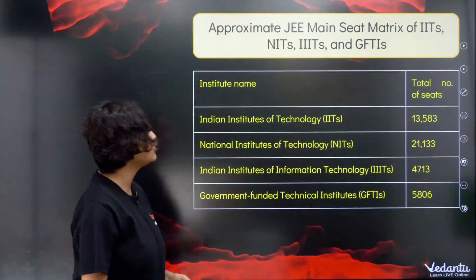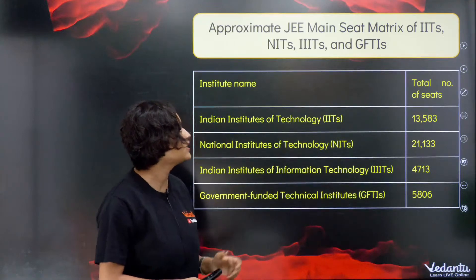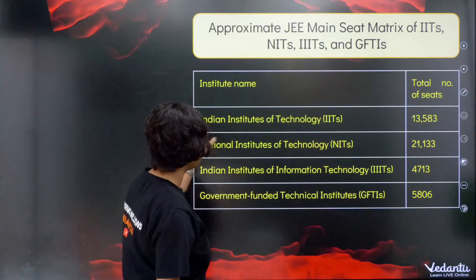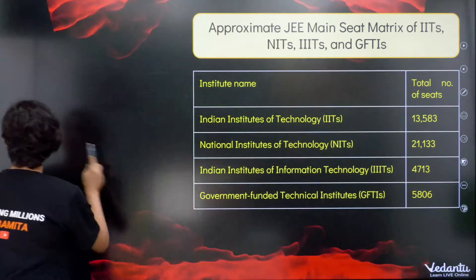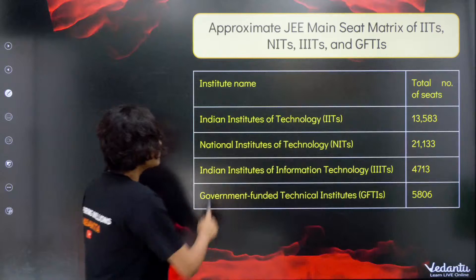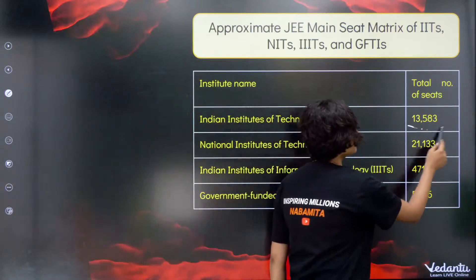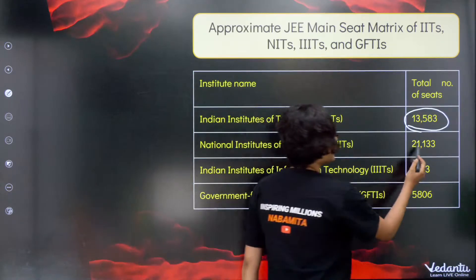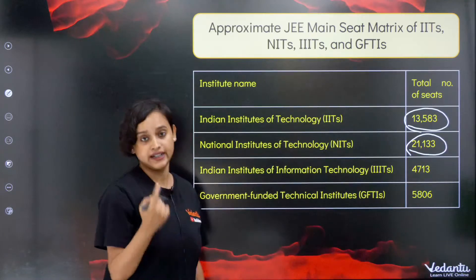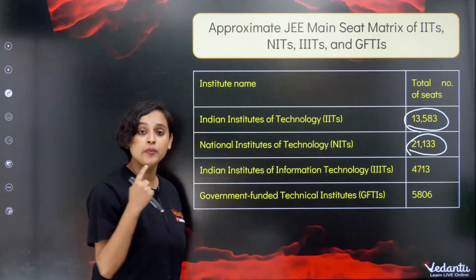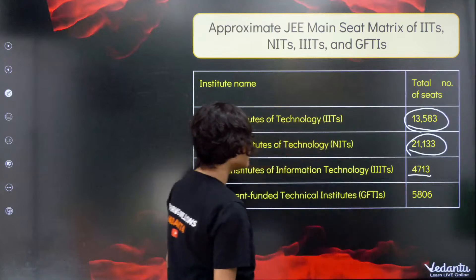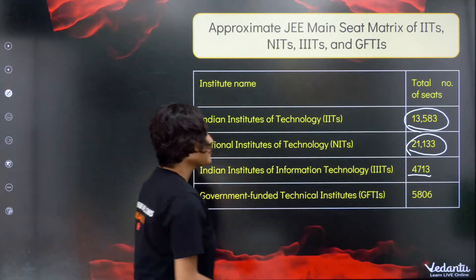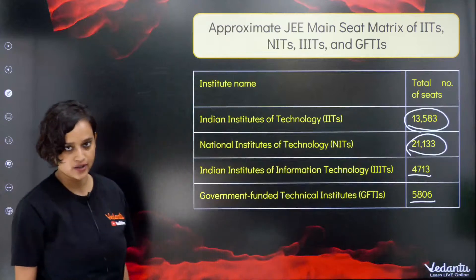Now let's talk about the approximate JEE Main seat matrix of IITs, NITs, IIITs, and GFTIs. Indian Institute of Technology — the total number of seats is 13,583. NITs have around 21,133 seats. Indian Institutes of Information Technology (Triple IITs) have around 4,713 seats. And GFTIs — Government Funded Technical Institutes — have around 5,806 seats.